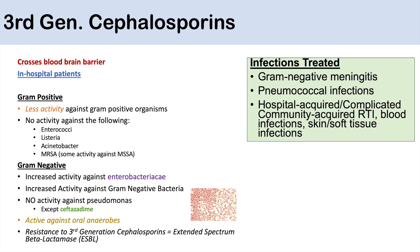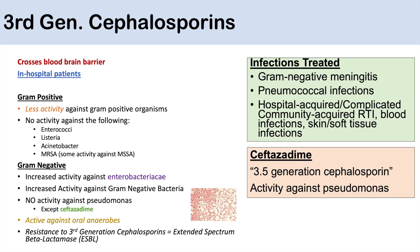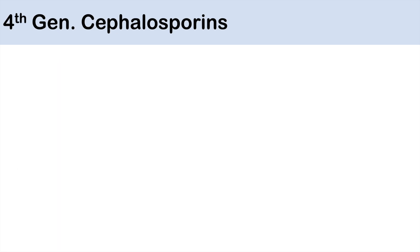Third-generation cephalosporins don't have activity against Pseudomonas except for ceftazidime. Ceftazidime can be thought of as a '3.5-generation' cephalosporin — it has similar activity to other third-generation agents but also covers Pseudomonas, which makes it special.